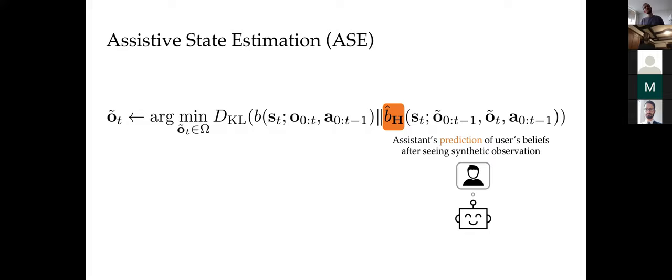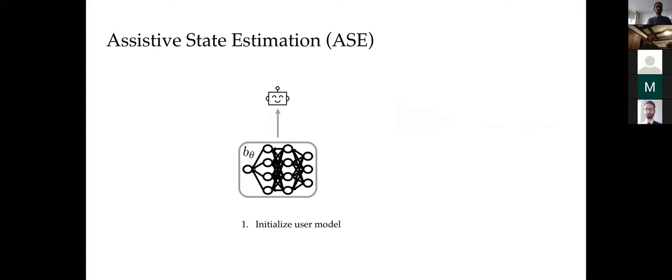The main challenge is that we don't have access to the user's internal state estimation process. We address this by learning a model of the user's belief update from demonstrations of user actions — a model of the user's internal model, so that we can predict when the user is going to make a mistake and correct for that beforehand.